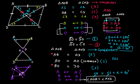Both angles are 90 degrees, and since all four angles at O form linear pairs — 90 plus 90 equals 180 degrees — all angles at the intersection are 90 degrees. Therefore, the diagonals of a rhombus bisect each other at right angles.